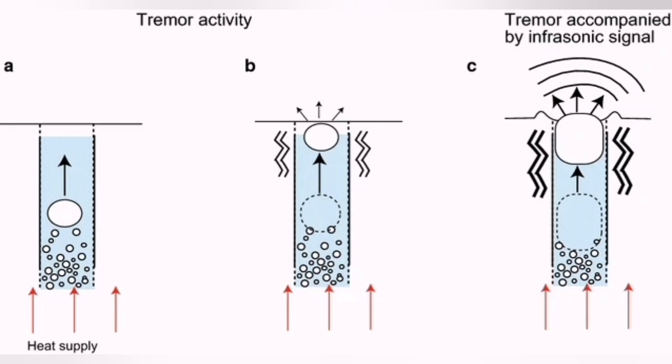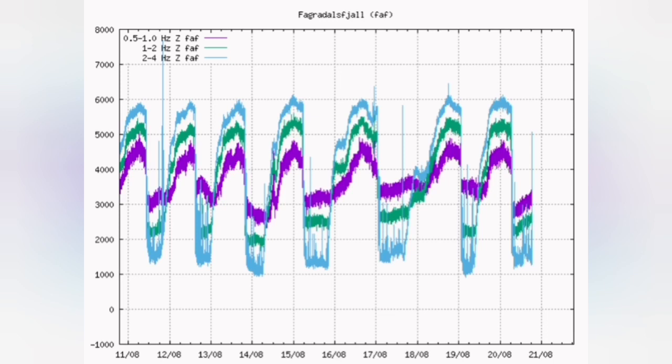And that seismogram shows us what happened. And those different lines, the green and the purple and blue, show the different sizes of the bursts and bubbles.